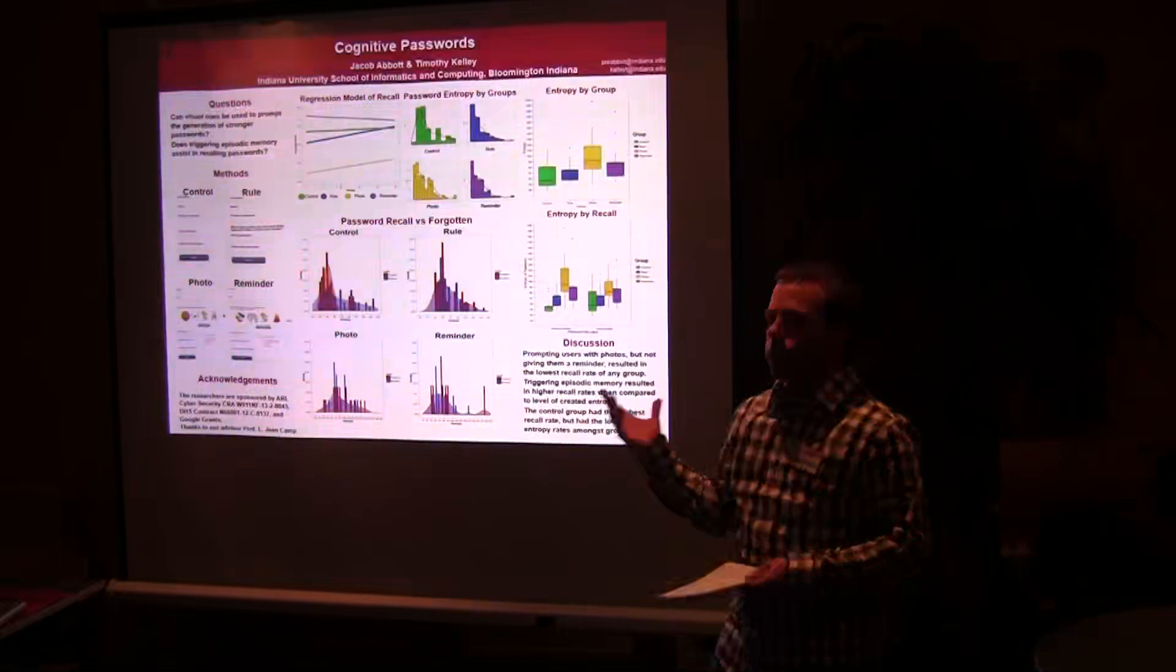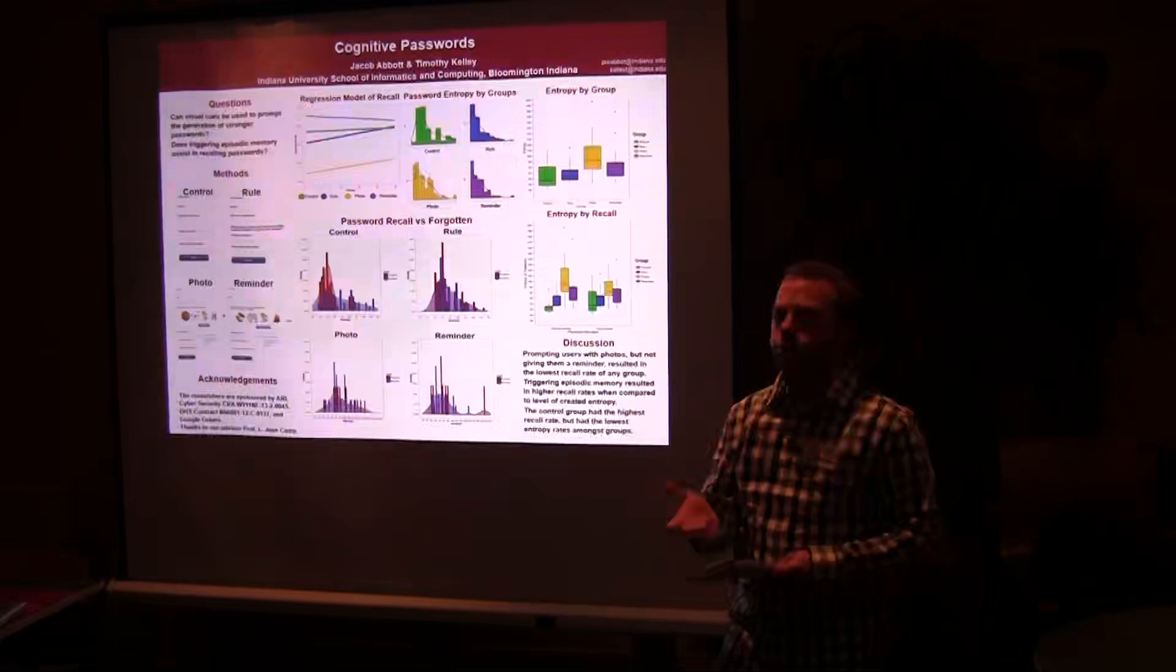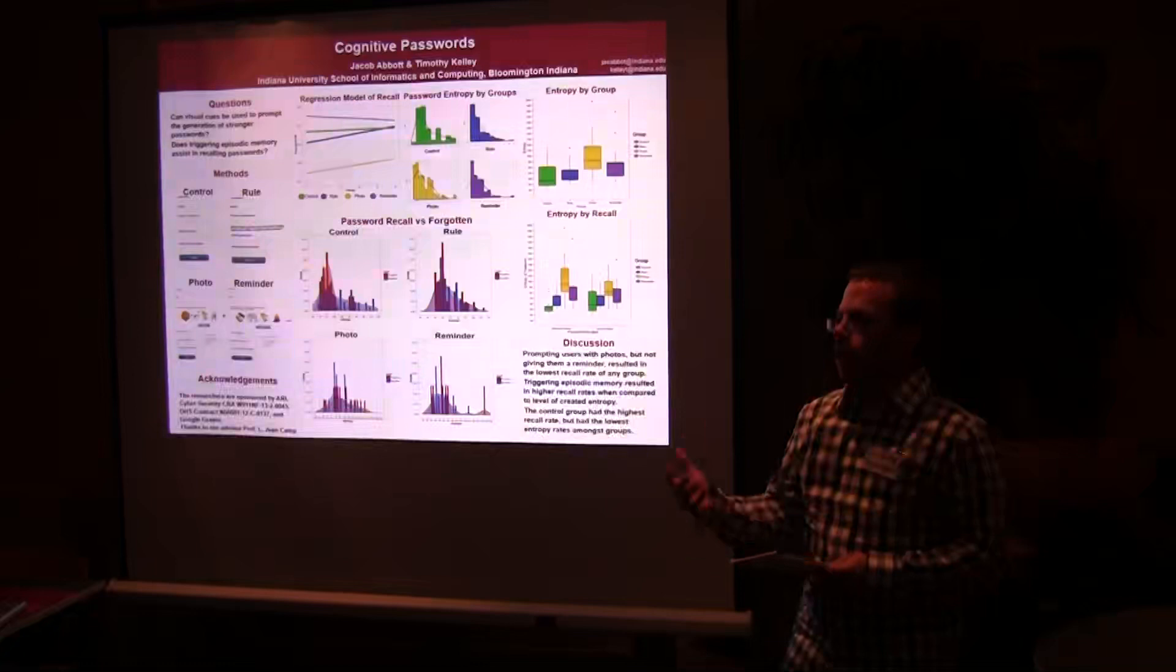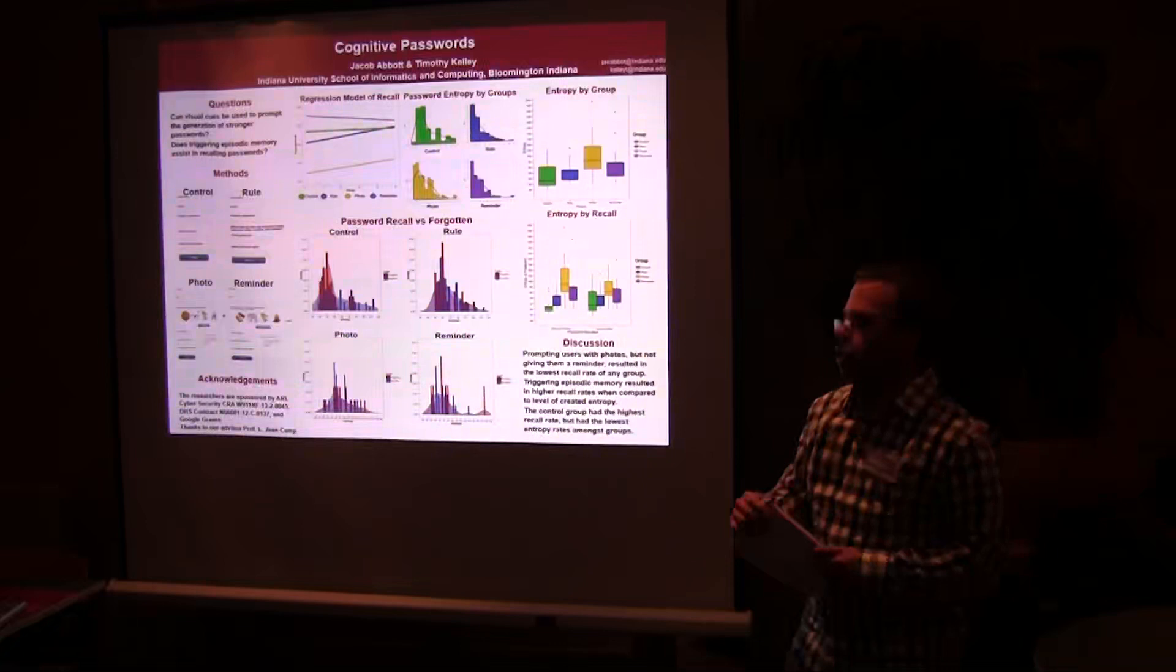With the rule group, we actually found that a large majority of them stayed very close to the minimum amount of length requirement. So the vast majority of them had eight characters in length and just barely met. But that can also be said for the control group as well.